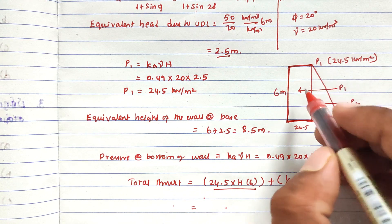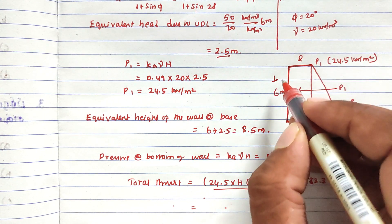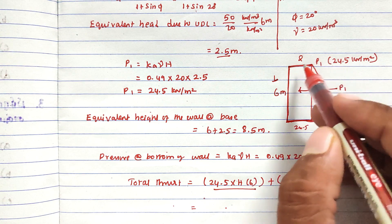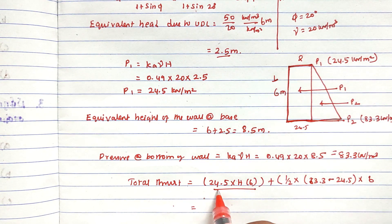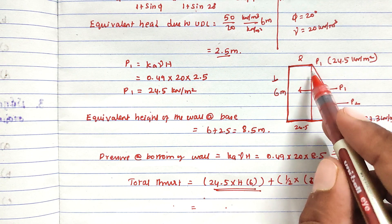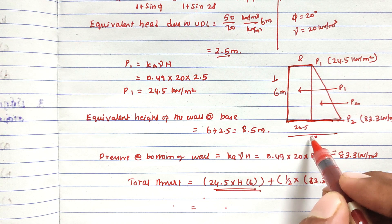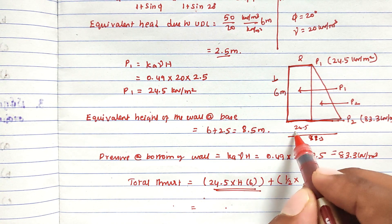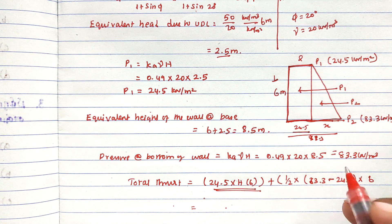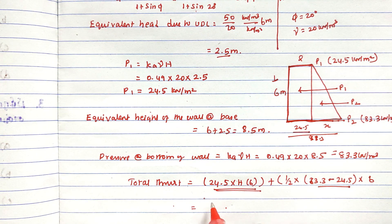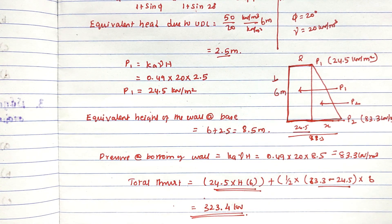The area consists of a rectangle: 24.5 into 6 meters, plus a triangle: half into (83.3 minus 24.5) into 6 meters. Solving this, we get the total thrust equal to 323.4 kilo Newton. This is the final answer. This is the method we can use to solve this problem. We will see the next problem in the next video, thank you.